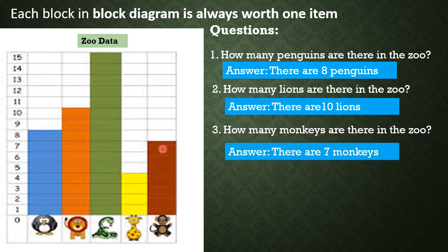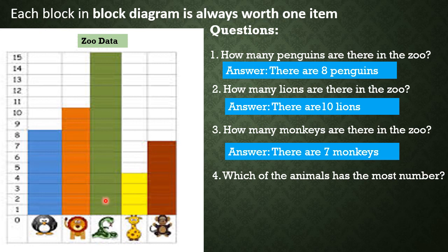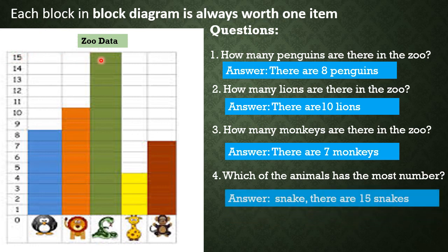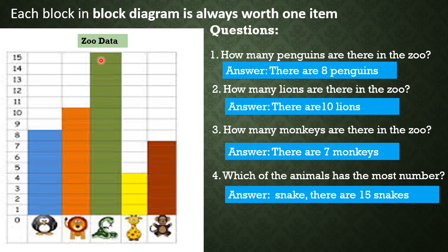Next question: Which of the animals has the most number? To know the animal with the most number, look for the highest number of blocks or the tallest block — and that is snake. Alongside the last colored block is number 15. So therefore, there are 15 snakes, and this is the most numerous animal.